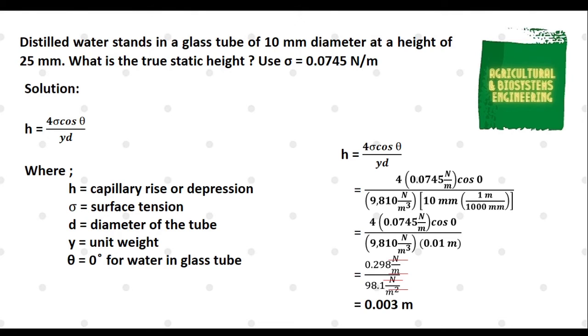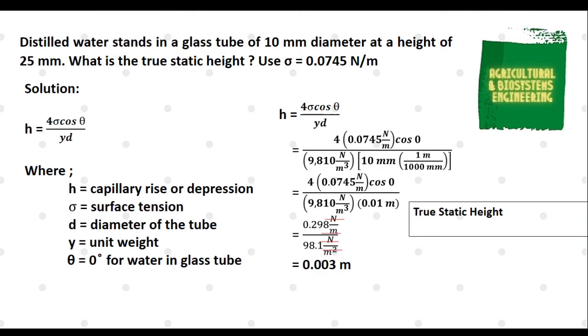Next, as we solve for the value of our true static height, we will use the formula: height of the given tube minus the capillary rise symbolized by letter h. We simply substitute the values. We now have 25 mm minus the capillary rise of 0.003 meters.